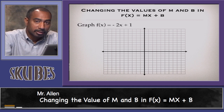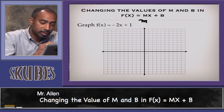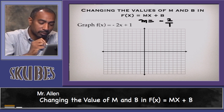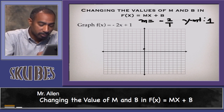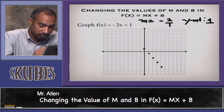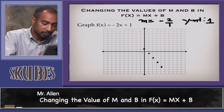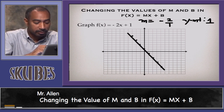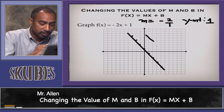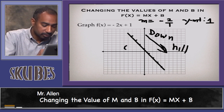Let's graph the function f(x) = -2x + 1. In this case, the slope is negative 2, or -2 over 1, and the y-intercept is 1. You start at 1. Since the slope is -2 over 1, go to the right 1 and then down 2, and so on. Or go to the left 1 and up 2. Notice this goes downhill — the opposite direction of the other line — but it still crosses through the point (0, 1).